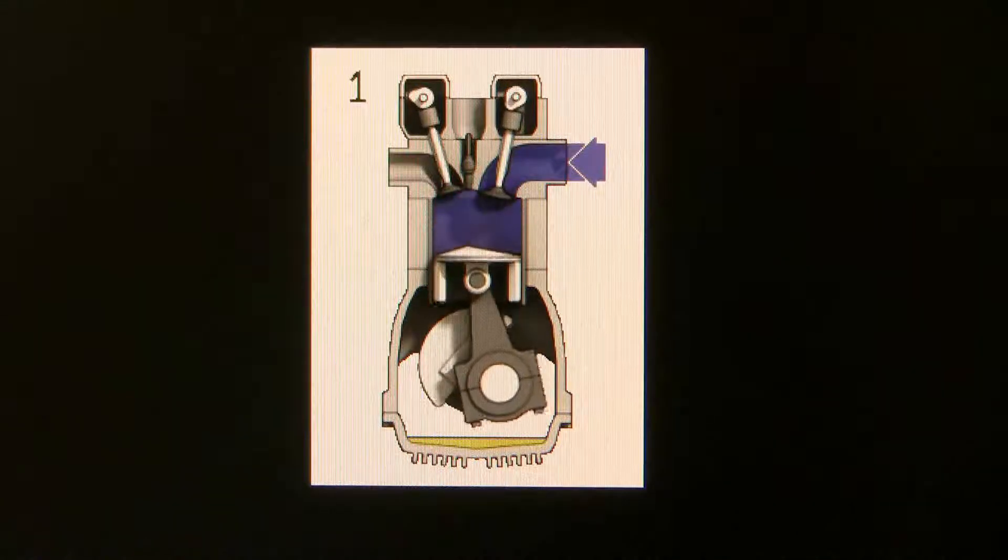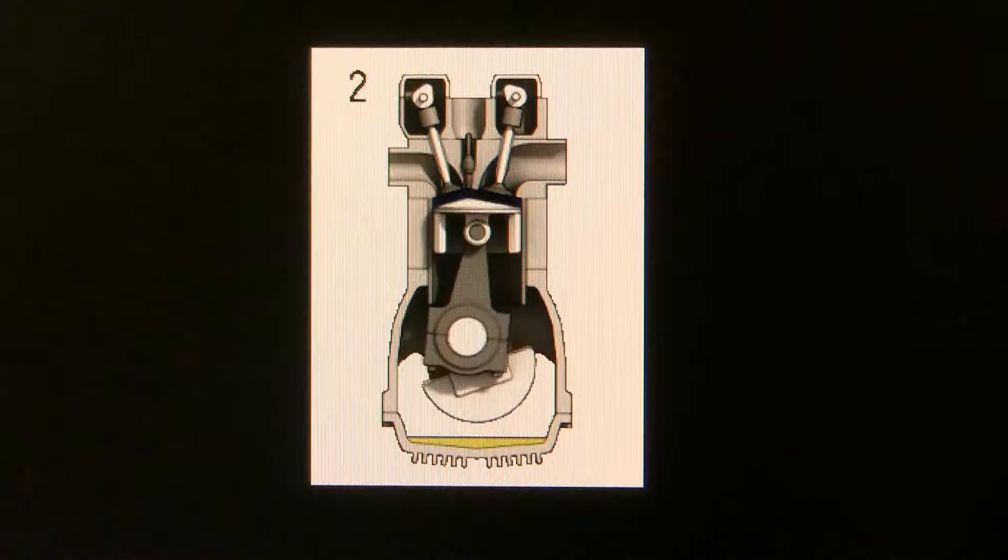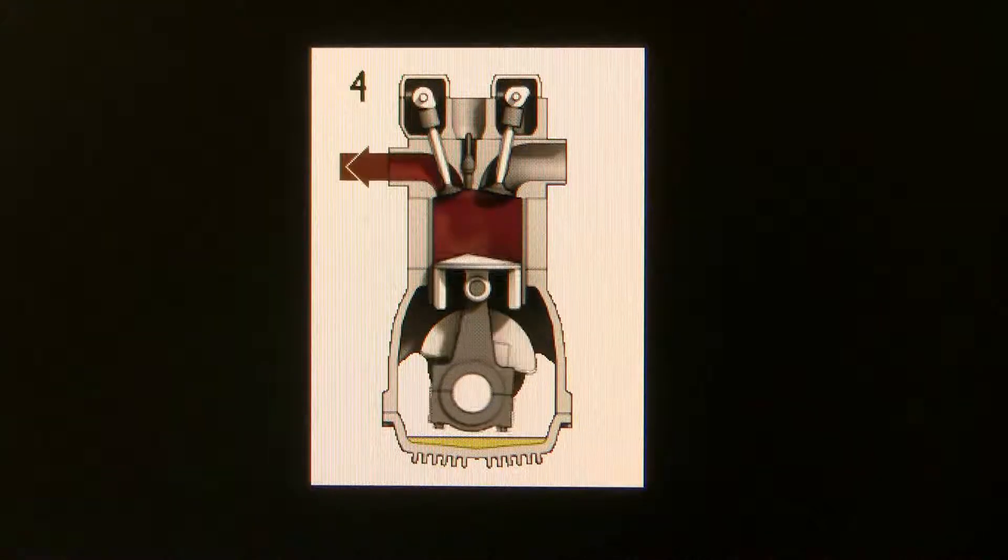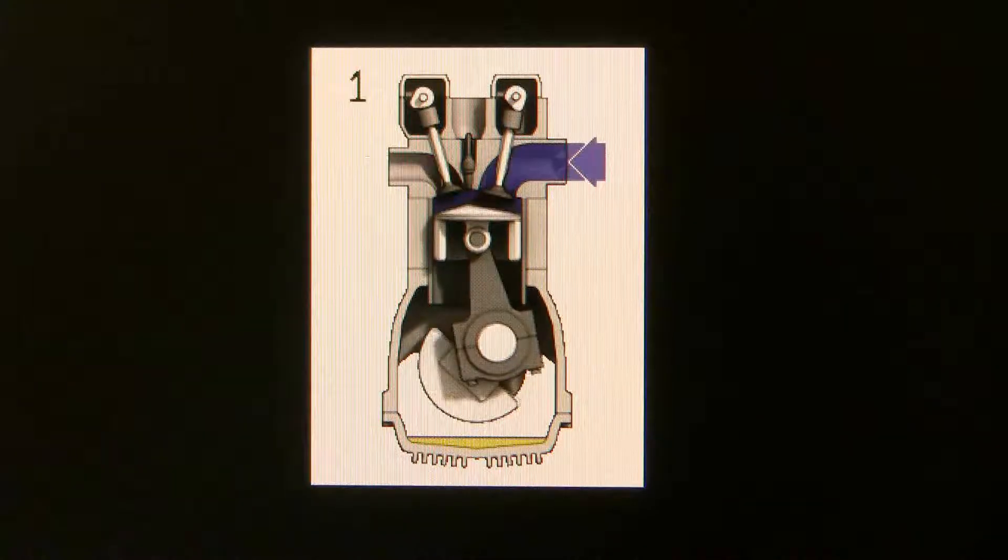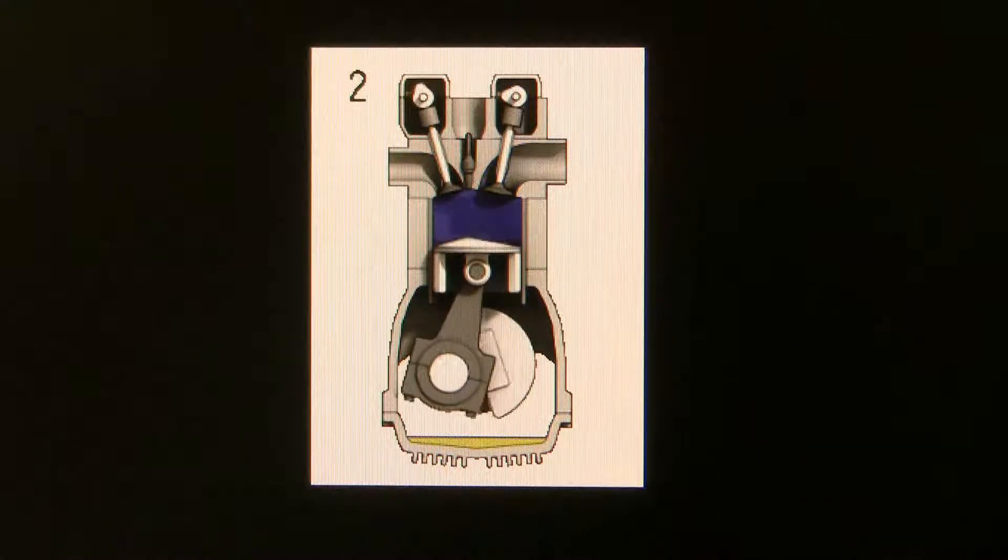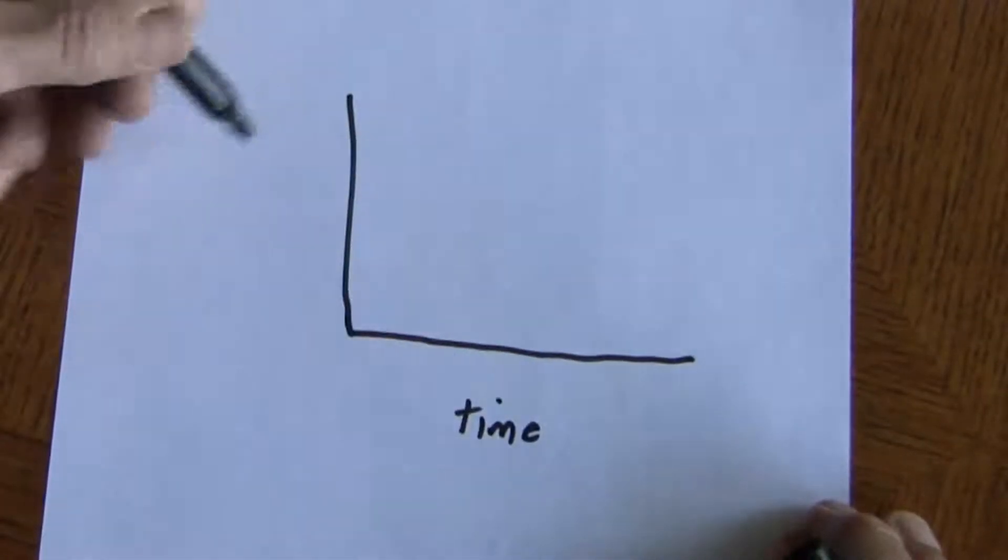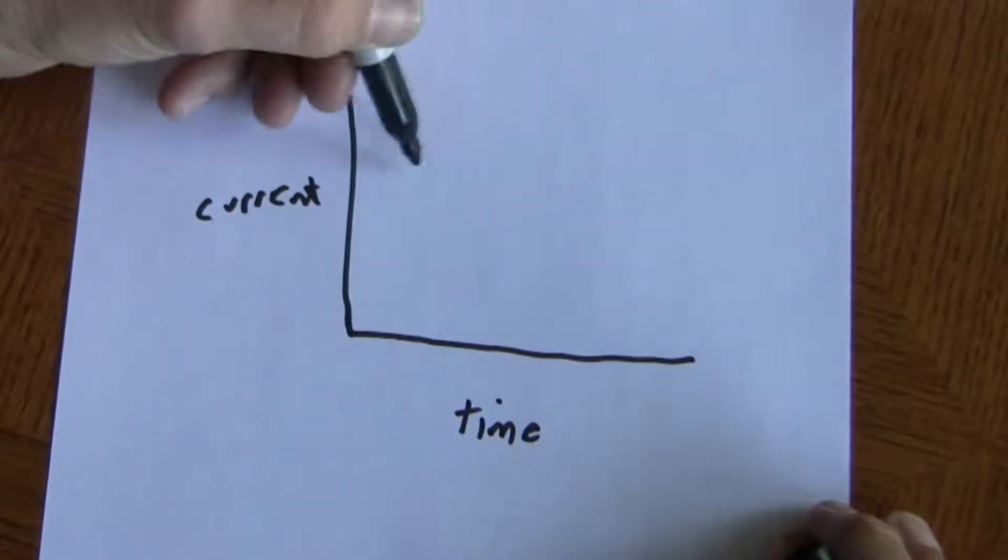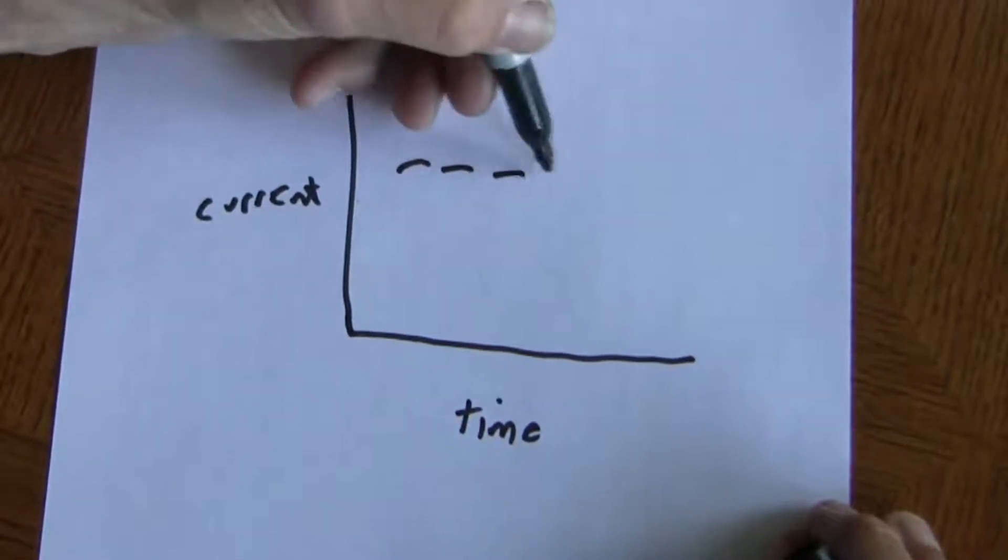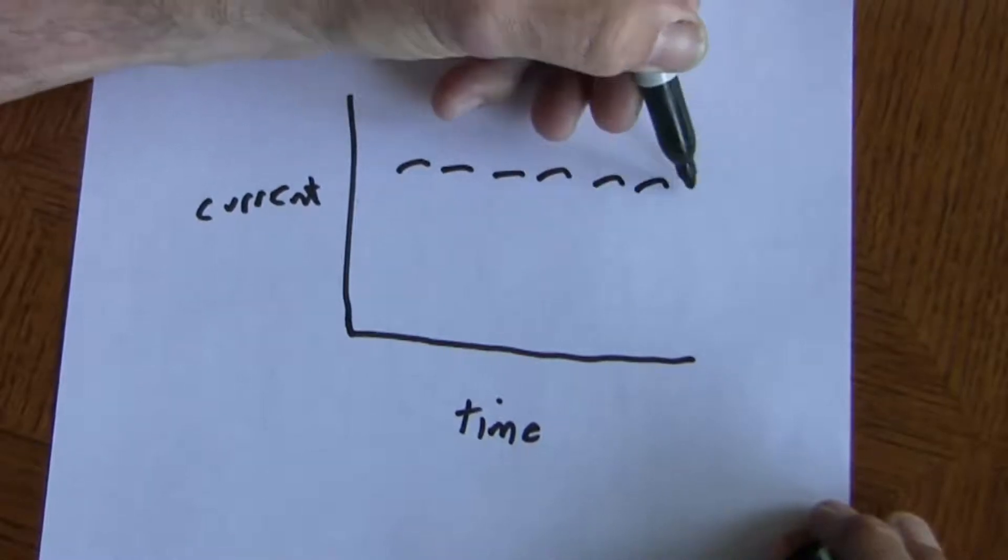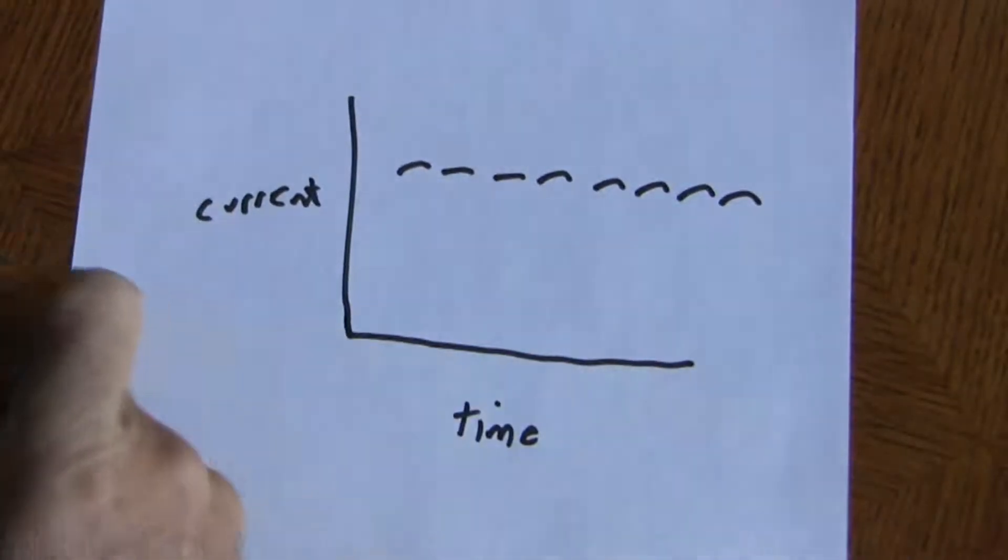Now remember that all multi-cylinder engines are designed to stagger their current cycles for smoother function. This means that although starter motor current draw represents the sum of all sources of resistance, at any moment the bulk of that resistance is coming from a single cylinder. This means that if you plot starter motor current draw against time, you'll get a series of humps, the height of each hump being relatively proportional to the compression of that single cylinder.